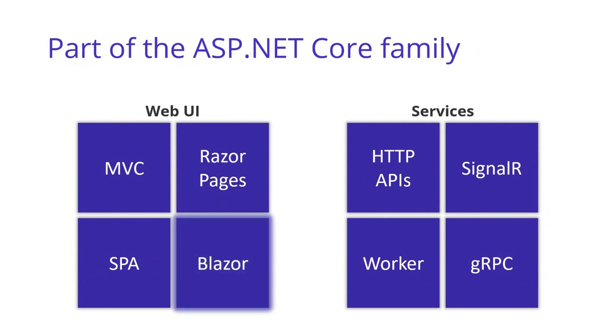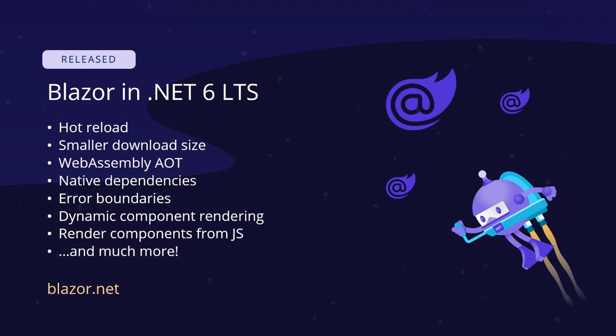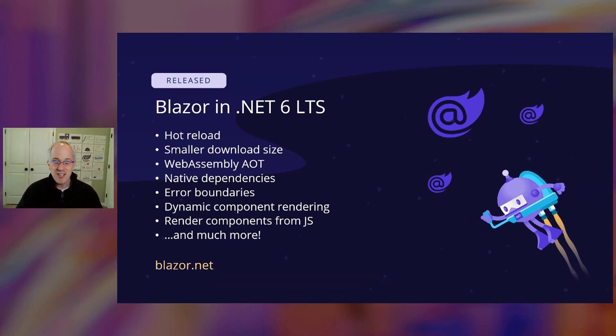Blazor sits alongside your other favorite ASP.NET Core technologies to handle all of your web development needs. This past November, we shipped a huge number of Blazor improvements with .NET 6, the latest .NET long-term support release. These improvements include hot reload, smaller download sizes for Blazor WebAssembly apps, WebAssembly ahead-of-time compilation, the ability to link in native dependencies, error boundaries, dynamic component rendering, the ability to render Blazor components from your JavaScript apps, and much more. You can get started with Blazor in .NET 6 LTS at blazor.net.